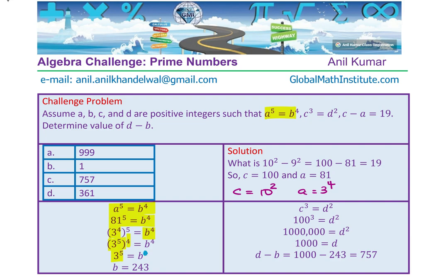There is a typing error. B is 3 to the power of 5. So we found B equals 3 to the power of 5, which is calculated as 243. That means 81 times 3. Is that clear to you? So we get the value of B.